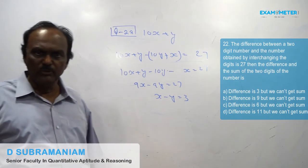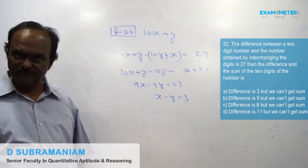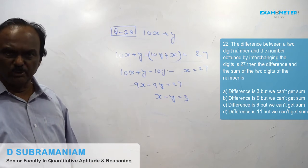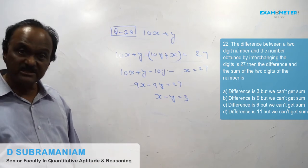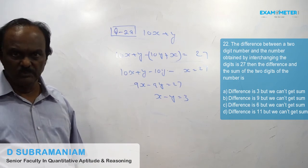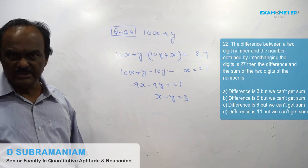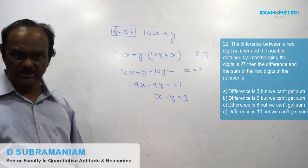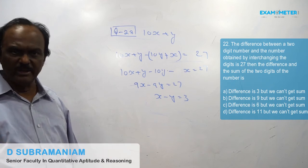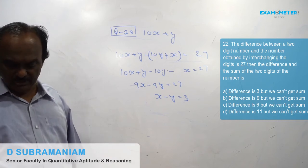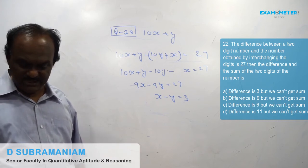You can find the difference of the digits but you cannot find the sum of the digits. So the answer is: you can find the difference but not the sum.